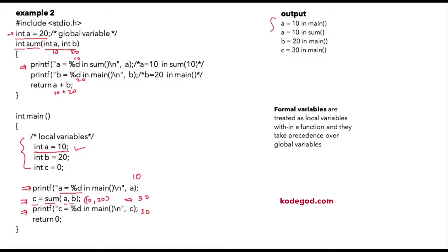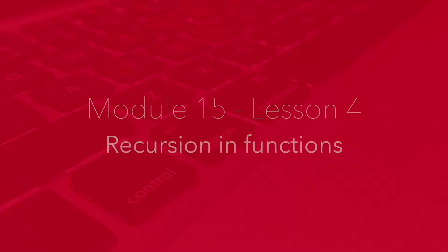The important point in this lesson is about formal variables wherein local variables are given higher precedence than global variables. In the next lecture we are going to write a few programs on functions to make your understanding even better.